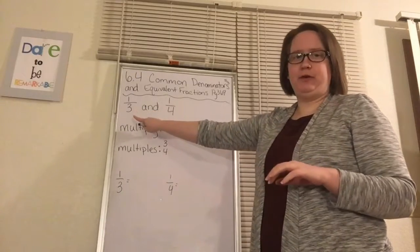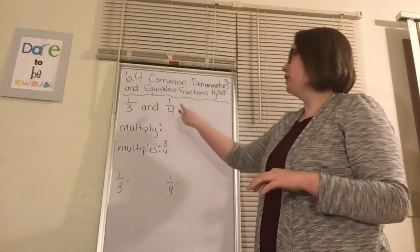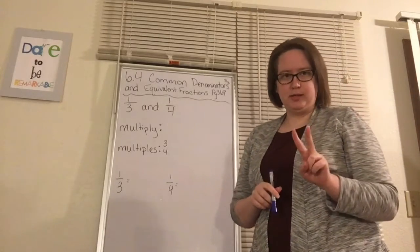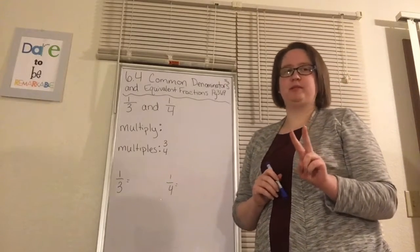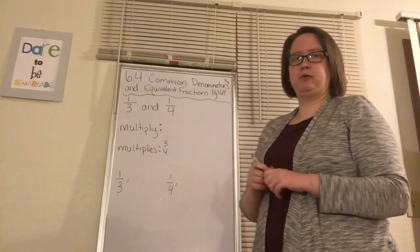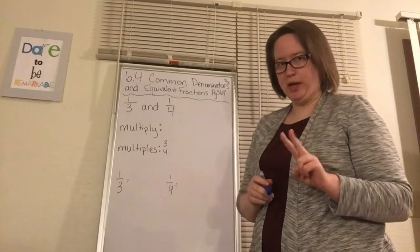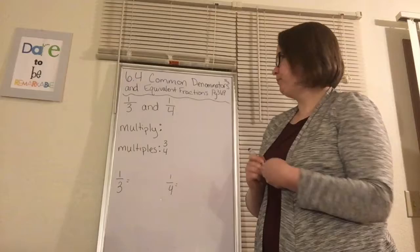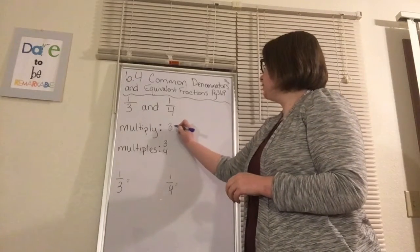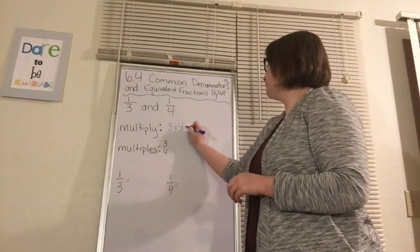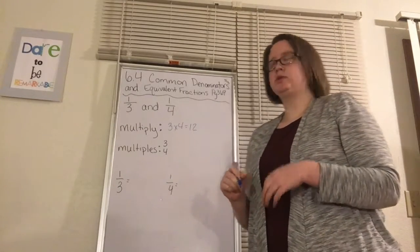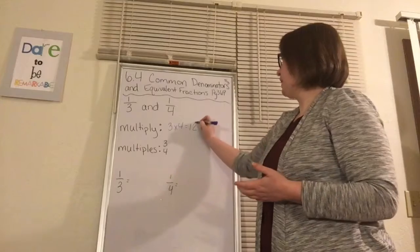We're going to look at the fractions 1/3 and 1/4 to start with. There are two ways in which we can find the common denominator. One way is to multiply — we're just going to multiply our two denominators together. So in this case, we're going to multiply 3 times 4, and that equals 12. So we would have a common denominator of 12.